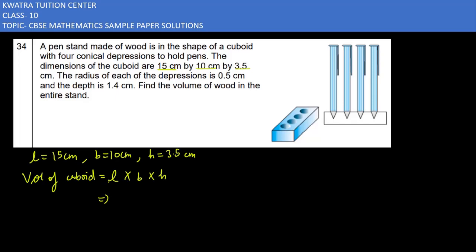Length into breadth into height, and that is four conical we have to get rid of. So length is 15, breadth is 10, height is 3.5. So 15 times 10 times 3.5, you will multiply, so it would be 525 cm³.